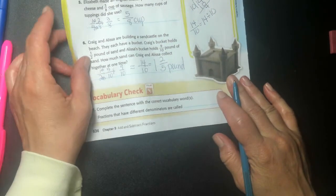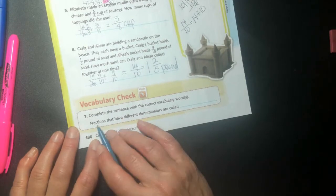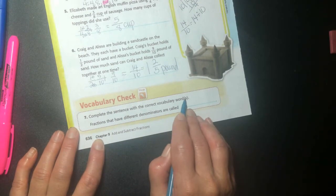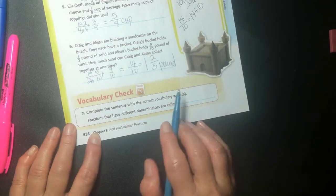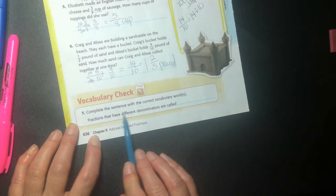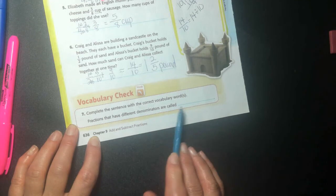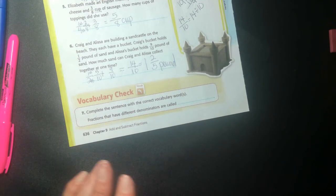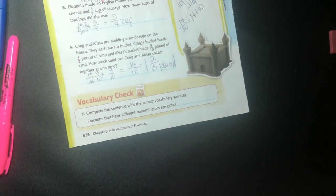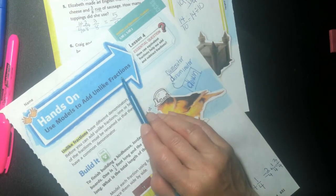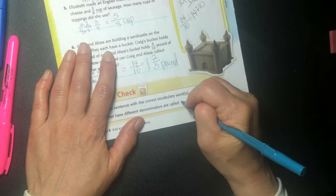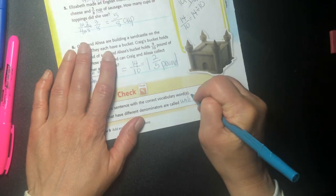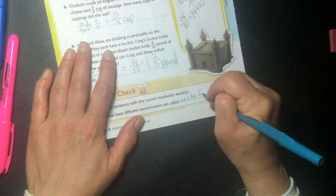And last but not least, complete the sentence with the correct vocabulary word or words, right? That's why they put the S. It might be a word. It might be two words. This time it's going to be two. Fractions that have different denominators are called unlike fractions, right? It comes right from the title of our chapter are called unlike fractions.